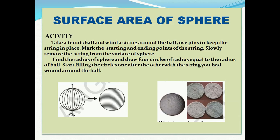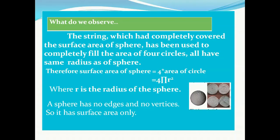What is the surface area of a sphere? Let us understand this with an activity. A tennis ball is taken and wound with the help of a string, fixed with a pin so that it is not disturbed. The starting and end points of this string are marked, and slowly the string is removed from the surface of the sphere. This string is then arranged on four circles which have the same radius as the sphere.